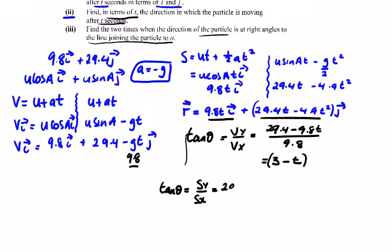So we're looking at 29.4t minus 4.9t squared over 9.8t. Again, dividing 9.8t into 29.4t, we get 3. And dividing 9.8 into 4.9, it's going to be half, so a half t, just t over 2.